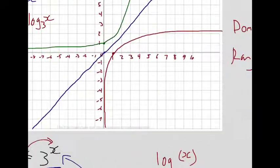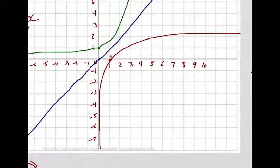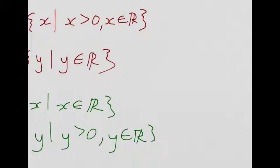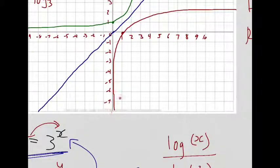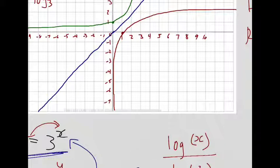The x-intercept of the logarithmic function is (1, 0). There are no y-intercepts, because the curve will never cross the y-axis. For asymptotes, there's a vertical line on the y-axis that the graph will never touch. Equations of vertical lines are in the form x equals some number — in this case, x equals zero is the equation of our asymptote.